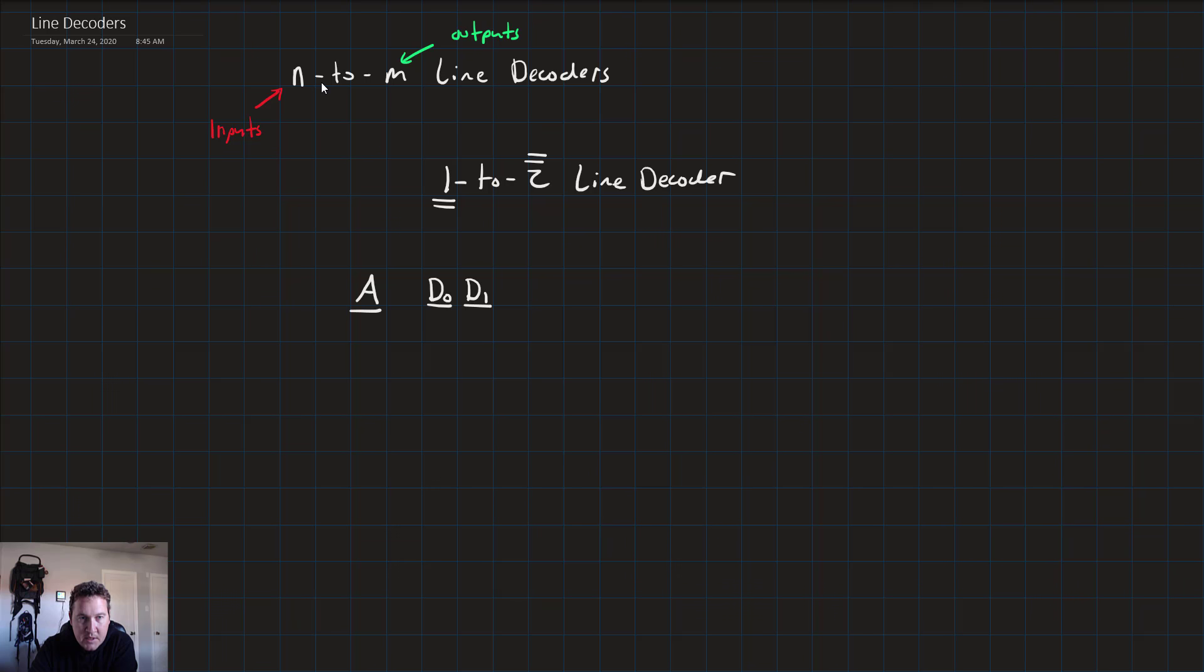Now A is one bit of input and so we only have two rows, 0 and 1. And the point here is that we want the individual output signals to activate when one of the minterms of the input is true. So it ends up looking like this. The output side of a line decoder truth table just looks like a diagonal matrix.